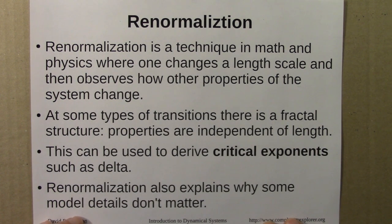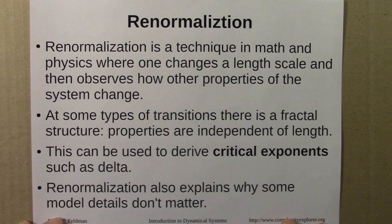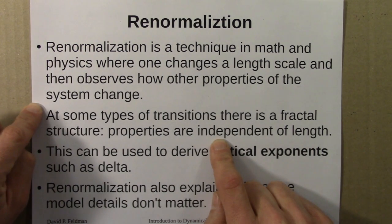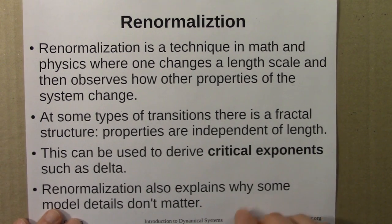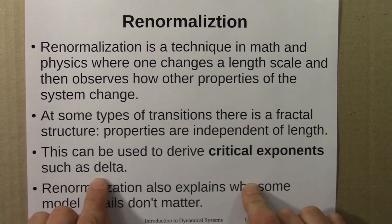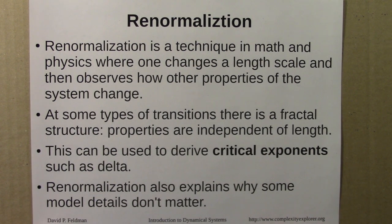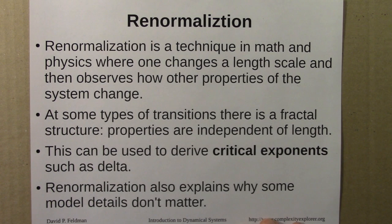For some types of transitions, there's a fractal structure — properties are independent of length. That was the case for the bifurcation diagram. We see a fractal structure in the bifurcation diagram for the logistic equation and other equations. We see those pitchforks or trees repeating again and again, even as we zoom in deeper and deeper. This realization that some properties are independent of length, together with the mathematical machinery for changing lengths, leads to techniques that can be used to derive critical exponents — a term from statistical physics — and delta is an example of a critical exponent. Renormalization also explains why some model details don't matter. In dynamical systems, many different initial conditions get pulled to the same attracting fixed point; when one applies renormalization, many different functions all go to the same attracting universal function. So the details of those functions — logistic, cubic, and so on — don't matter for this universal behavior.